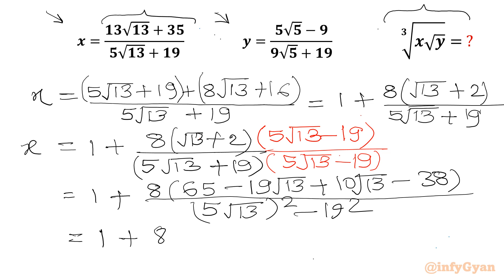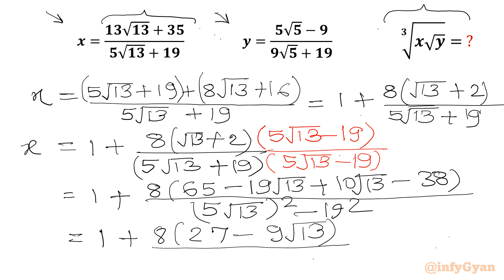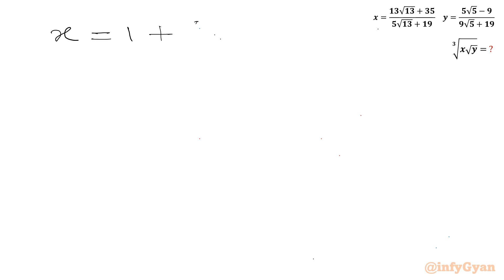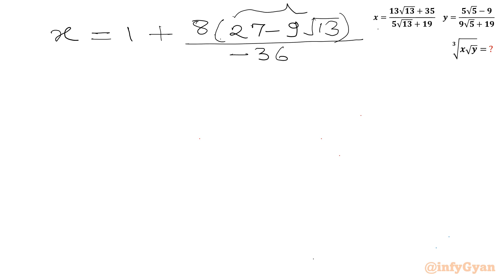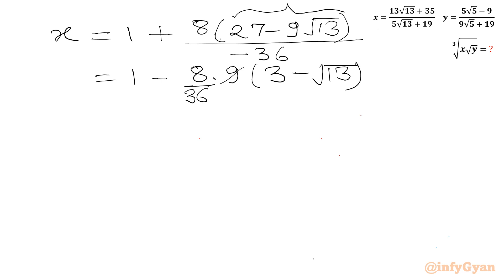So 8 times (27 − 9√13) in the bracket. The denominator will be 325 minus 19² which is 361, giving us negative 36. So I will write x equal to 1 plus 8(27 − 9√13) divided by negative 36. From this bracket we can take 9 common out. So 1 minus 8 over 36, and 9 is also common, giving (3 − √13). So 3 − √13. Now we can cancel.